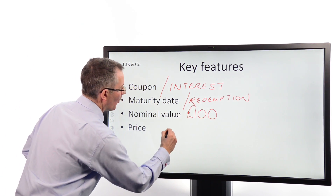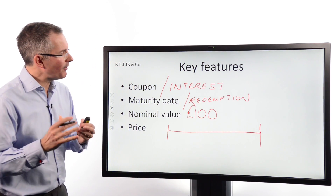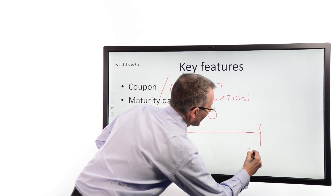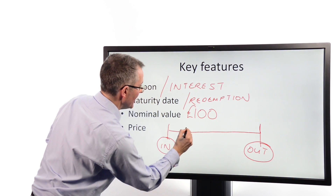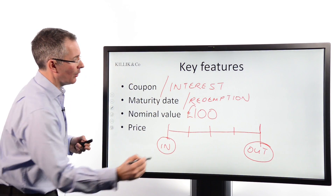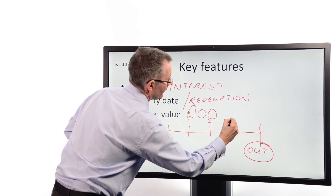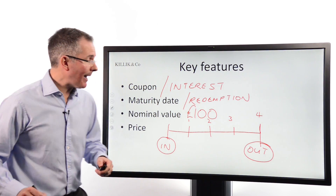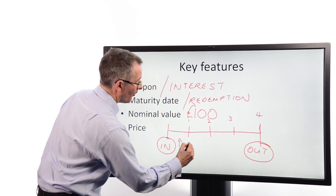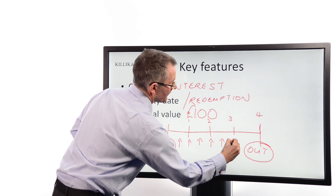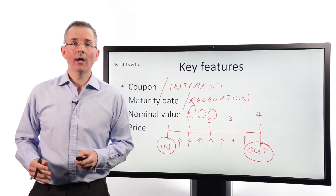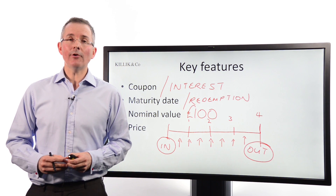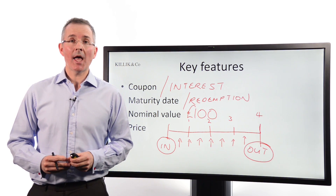To wrap up: fixed income securities are a bit like a bank account from a cash flow perspective. You put your money in at one end, you get it back out at the other end, and in the middle it pays a series of coupons — typically every six months. So there you have it: a brief tour of the jargon associated with the asset class known as fixed income securities, also known as bonds.